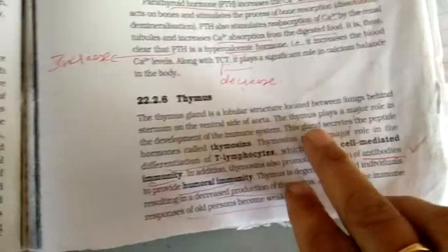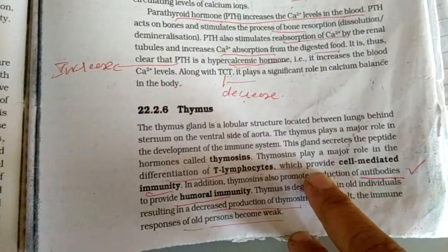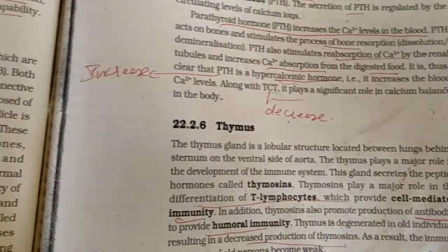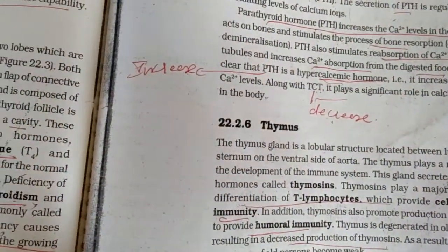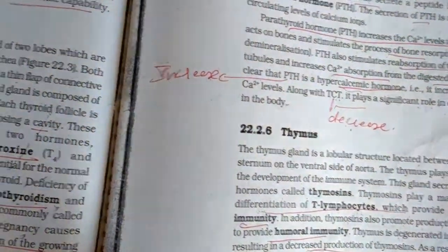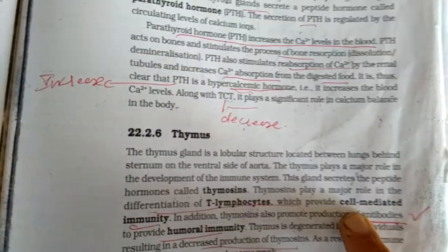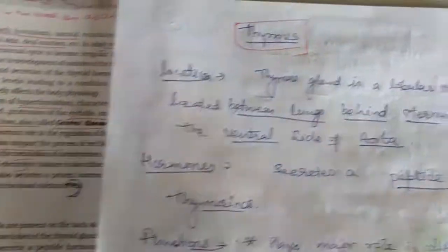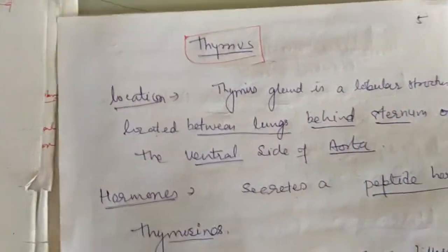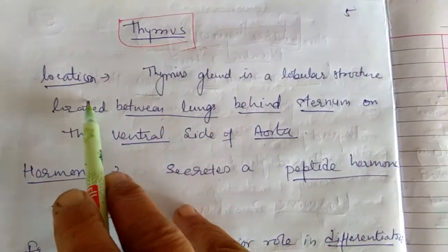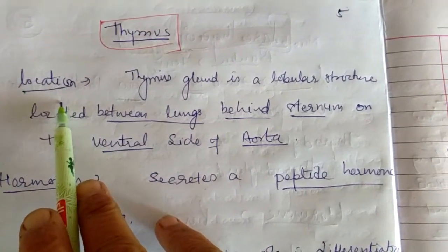Today we are here discussing the thymus gland — where it is located and what its functions are. After that, we will be discussing the adrenal gland. I have converted the whole topic of today's lesson into the form of notes. So first, we are to see the location of the thymus gland.